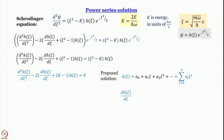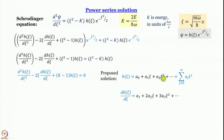Computing dh/dξ: differentiating a₀ gives 0, differentiating a₁ξ gives a₁, differentiating a₂ξ² gives 2a₂, and so on. The derivative of this power series is another power series: a₁ + 2a₂ξ + 3a₃ξ² + and so forth.